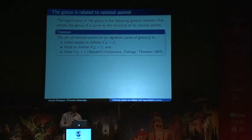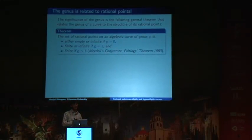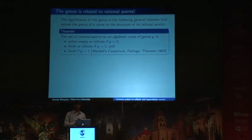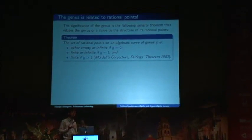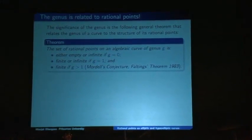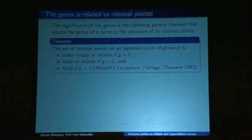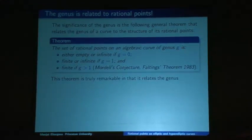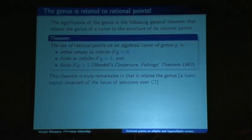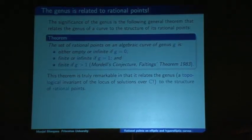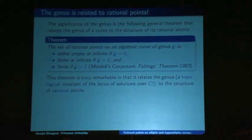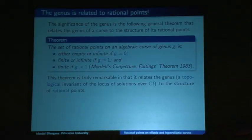So there are three situations: genus zero means the set of rational solutions is either empty or infinite; genus one means it could be either finite or infinite; and genus bigger than one means you definitely have only finitely many solutions. The topology — the number of donut holes after you graph the equation — tells you something about the structure of rational points. This theorem relates the genus, a topological invariant of the locus of solutions over ℂ, to the structure of rational points over ℚ.